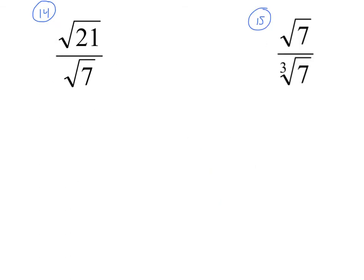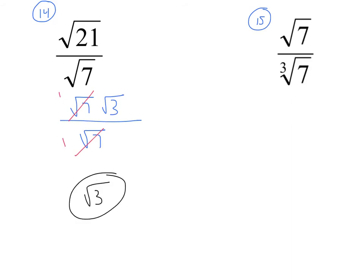Now we're going to look at the division ones. It can be confusing because you have to think about what type of problem you're working with. In number fourteen, I have the same type of radical — they're both square roots. In number fifteen, they're not the same type. For fourteen, the square root of 21 factors as radical 7 times radical 3, and on the bottom I've got radical 7. Radical 7 divided by radical 7 is just 1, so this equals radical 3.